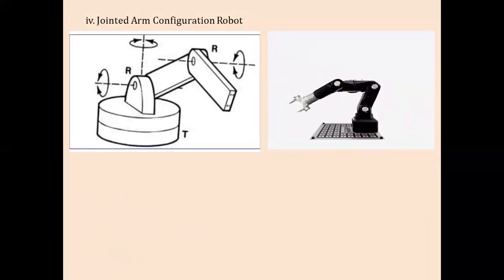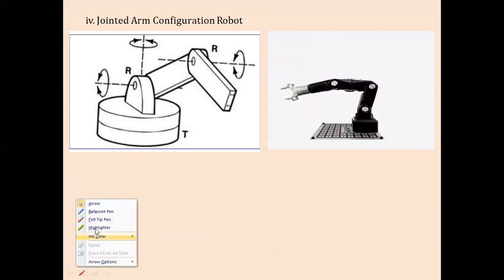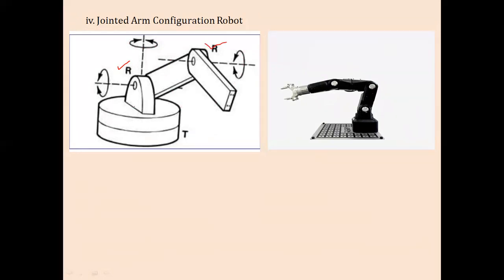Next is the jointed arm configuration. In this configuration, there is one rotation along the R-joint on the first axis, a second R-joint rotation on another axis, and rotation in the vertical direction along the T or twisted joint. This configuration has no sliding joints at all — it is completely based on rotational joints. The robot is mounted on a base that can swivel along the vertical axis using the T-joint.